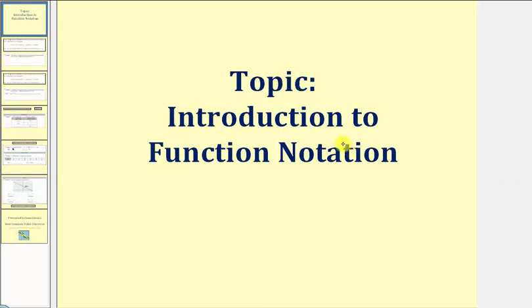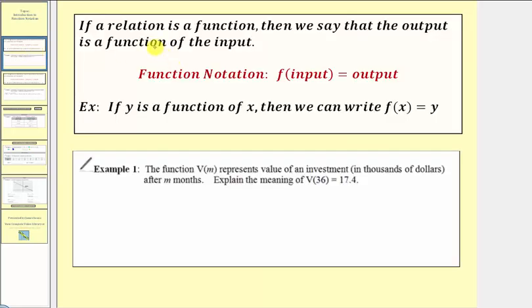Welcome to an introduction to function notation. If a relation is a function, then we say that the output is a function of the input. We can communicate this information using what's called function notation — a special notation used to let us know that the output is a function of the input.